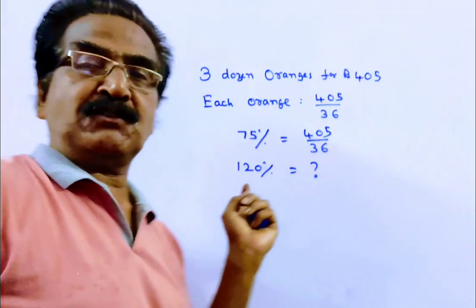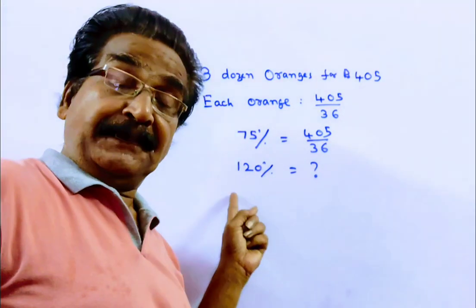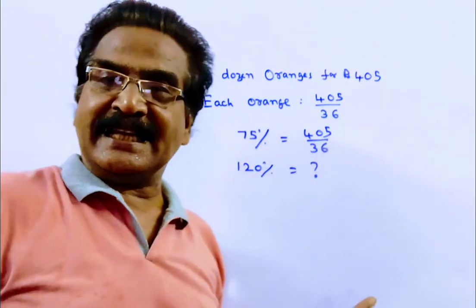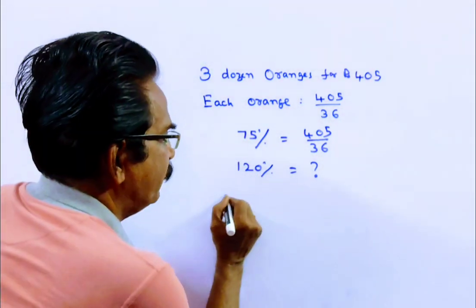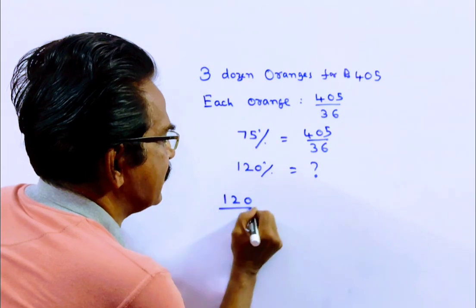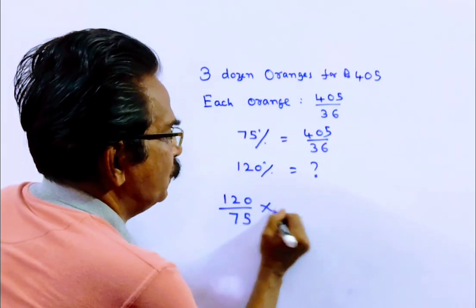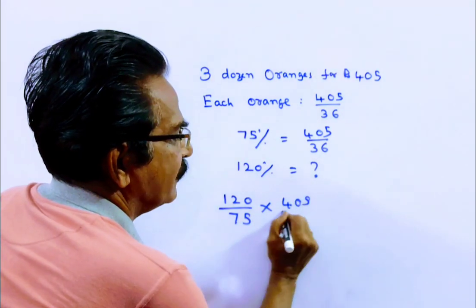So, if he wants to have a gain of 20%, then what will be the selling price of each orange? So, 120 upon 75 into 405 by 36.